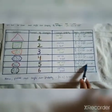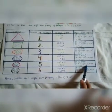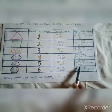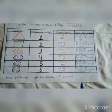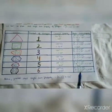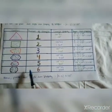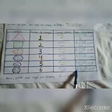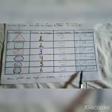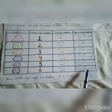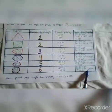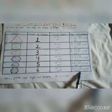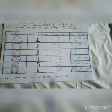For the septagon: 7 - 2 = 5, and 5 × 180 = 900 degrees. The number of sides in an octagon are 8, so 8 - 2 = 6, and 6 × 180 = 1080 degrees.